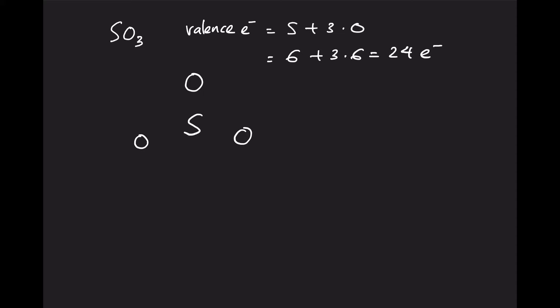The easiest way to start is to write down two dots between each atom, giving us 6 electrons used, meaning we have 18 more to distribute. To follow the octet rule, we need eight electrons around S and around each oxygen atom. We can put two more electrons on S in a double bond manner, since oxygen is able to form double and even triple bonds, unlike hydrogen or the halides. For the oxygen at the left side we add more electrons to fulfill the octet rule, and the oxygen at the top already has four electrons so we add four more.